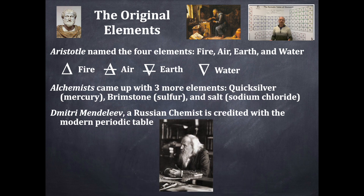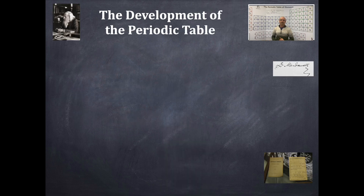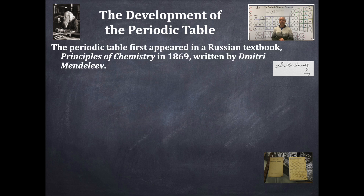Dmitry Mendeleev was the Russian chemist who came up with the basics of the modern periodic table. In 1869, he wrote a textbook — the first of numerous chemistry textbooks he would write. The following year, in 1870, he published a scientific paper on the periodic table.